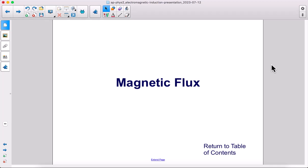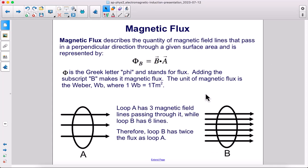Magnetic flux describes the quantity of magnetic field lines that pass in a perpendicular direction through a given surface area and is represented by this equation. Phi, or the flux, the magnetic flux, remember B stands for magnetic, equals B dot A.